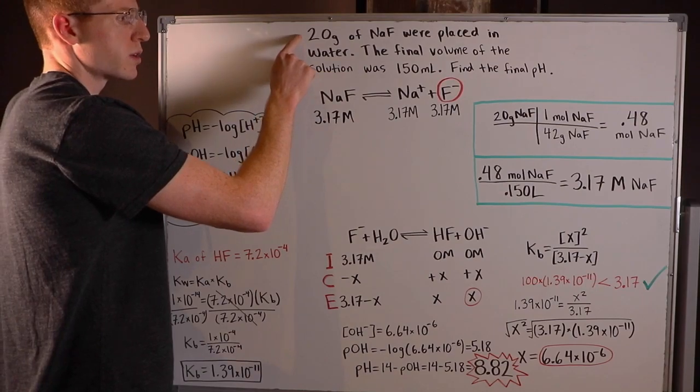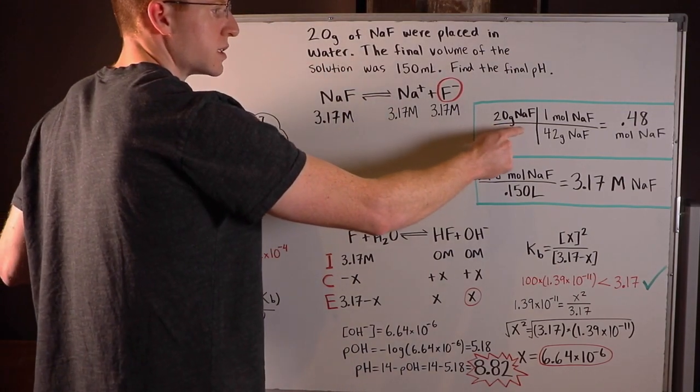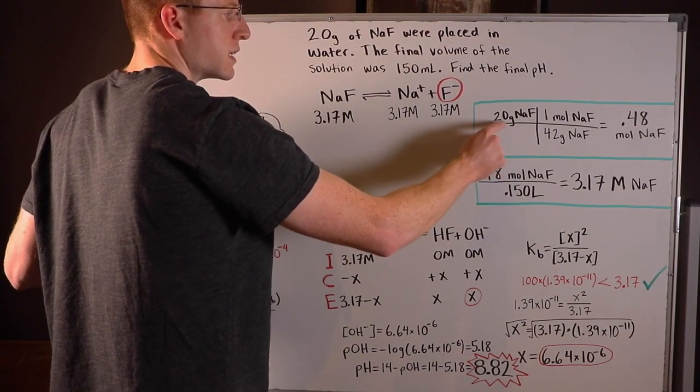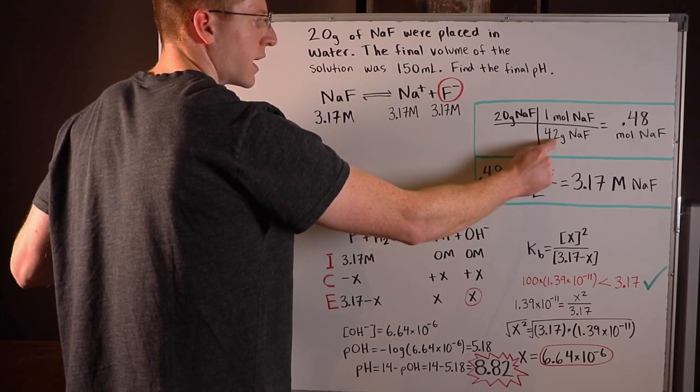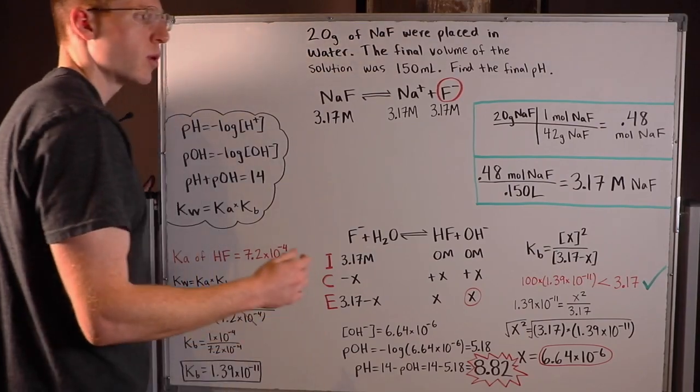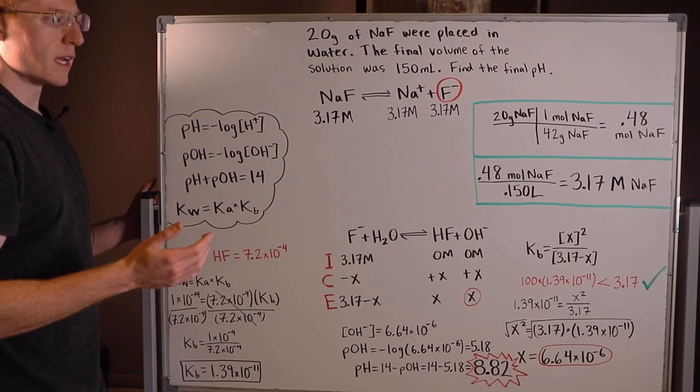So I knew we started out with 20 grams of NAF. So to get that into moles of NAF, I simply divided by the molecular weight of sodium fluoride, 42 grams, and I found that we had 0.48 moles of NAF.